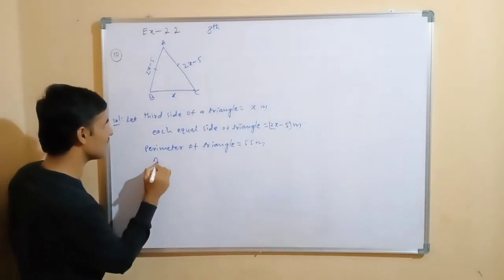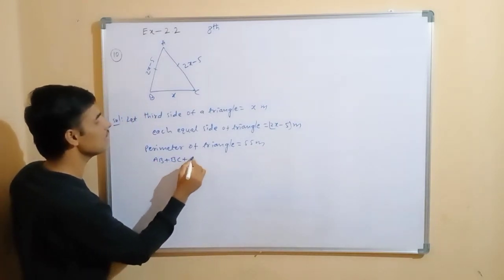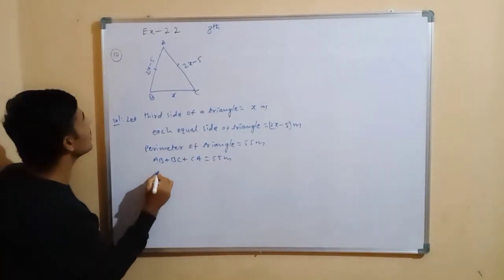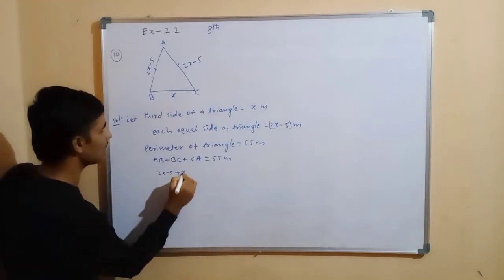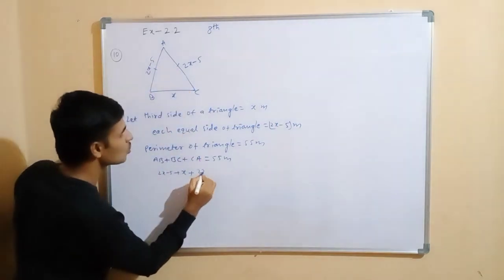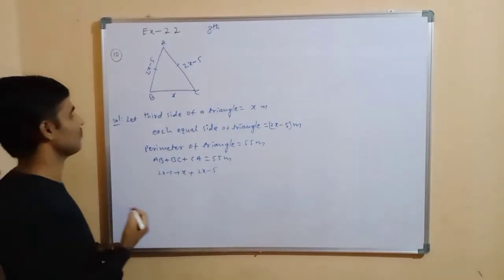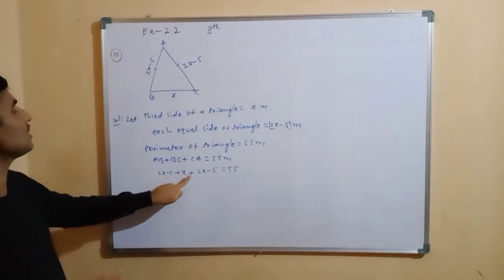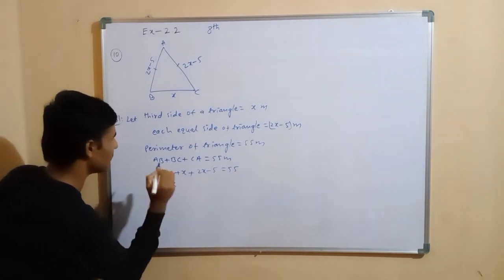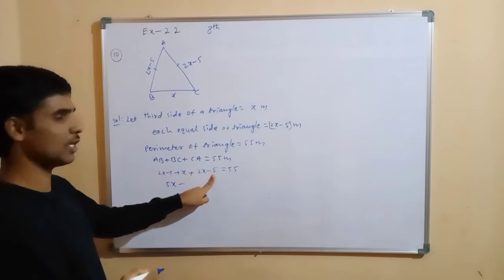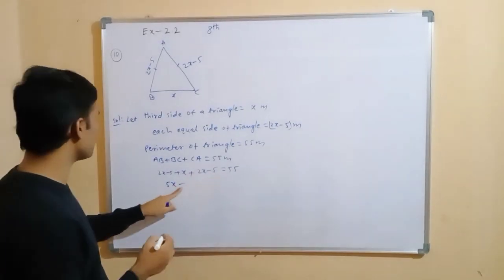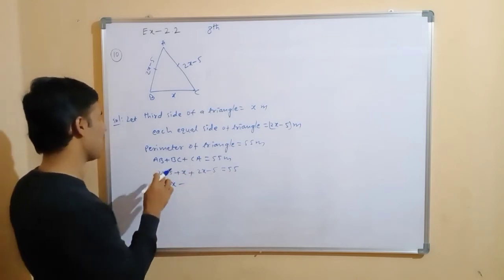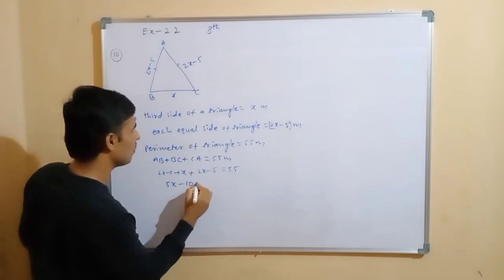Perimeter means AB plus BC plus CA equal to 55 meters. AB equals 2x minus 5, BC equals x, and AC equals 2x minus 5. So: (2x minus 5) plus x plus (2x minus 5) equals 55. Combining: 2x plus x plus 2x gives 5x, and minus 5 minus 5 gives minus 10, so 5x minus 10 equals 55.